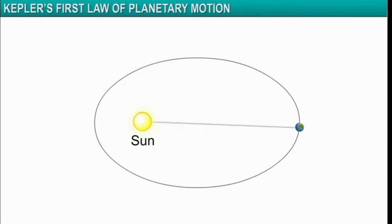The closest point on a planet's orbit from the Sun is called perihelion, and the farthest point from the Sun is called aphelion.